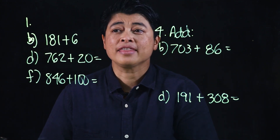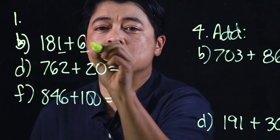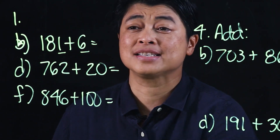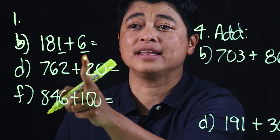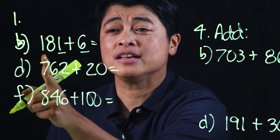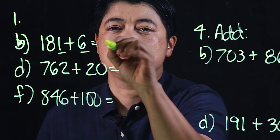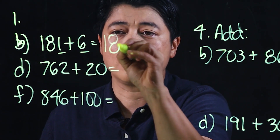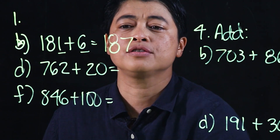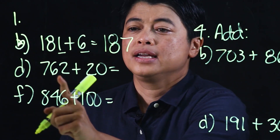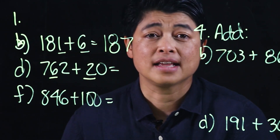Mental math means we're just adding a single place value. When it's the ones that we're adding, everything else stays the same — it's copy, copy, and add. So that would make it 187. In this case it's the tens that we're adding, which means the hundreds and the ones stay the same and we add the tens.